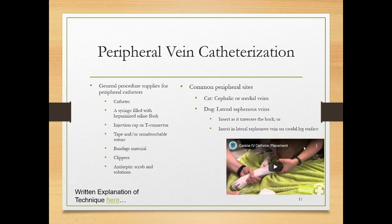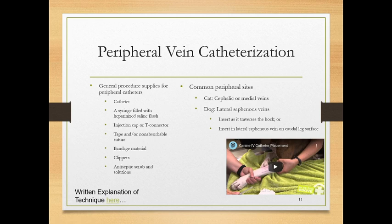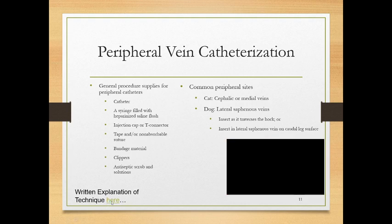There's another video for you to watch — download and open in presentation view. When watching videos, imagine yourself as the person placing the catheter or the person holding the patient. For the general procedure, supplies needed include the catheter, a syringe filled with saline or heparinized saline to prevent clotting, an injection cap or T-connector to block the catheter end, tape or non-absorbable suture, bandage material, clippers, and antiseptic scrub and solution.